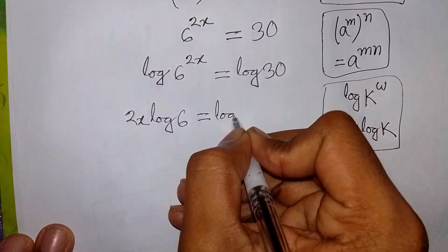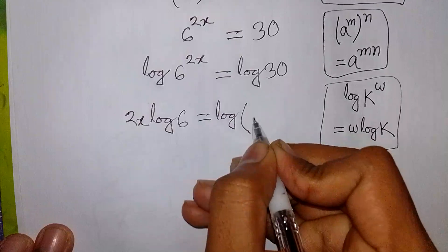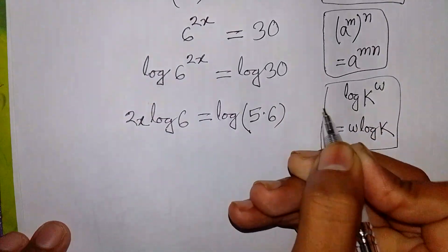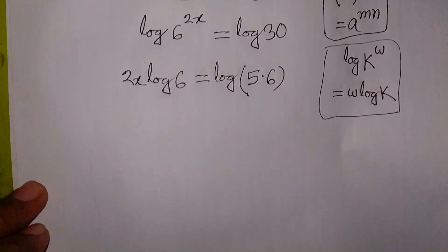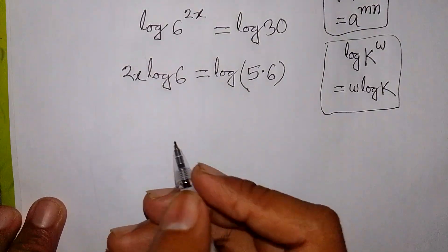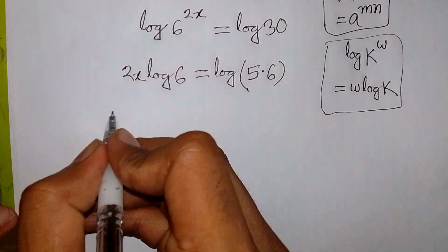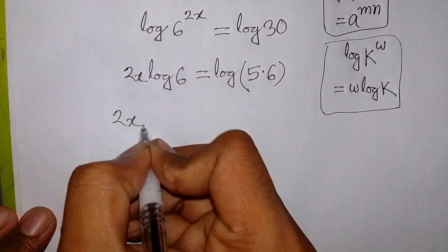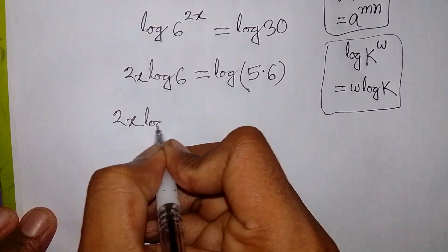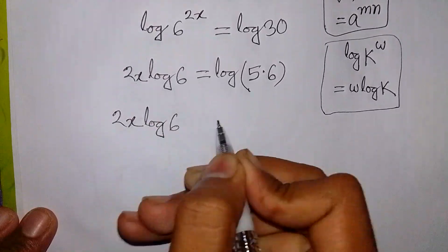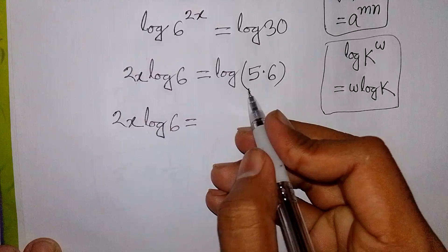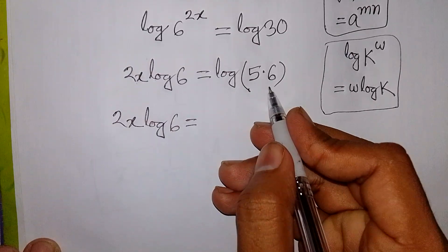Log 30 can be written as log of 5 times 6. So now we have 2x log 6 is equal to log of 5 times 6.